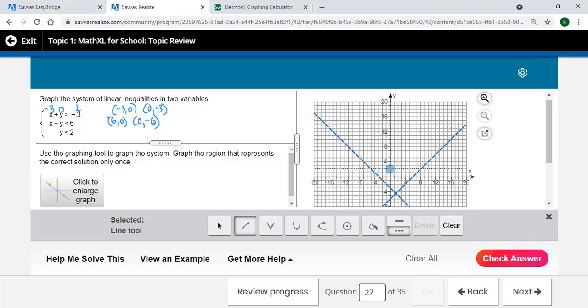Now we need to use the graphing tool to graph the region that represents the correct solution. We're supposed to shade just once, so we have to grab the paint bucket and fill in where my solution is. I really have a whole bunch of different regions that could be the answer—there's one out here, one up there, one here, one down here, or inside this triangle. So now we have to think about where is my solution.